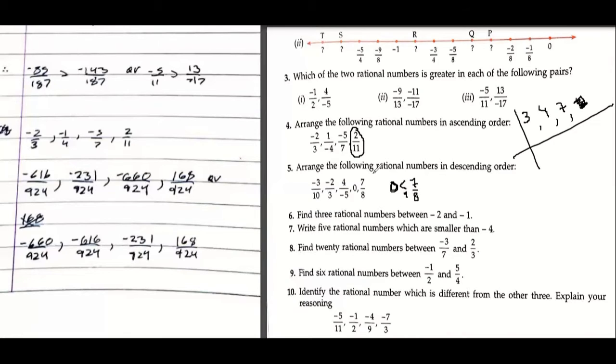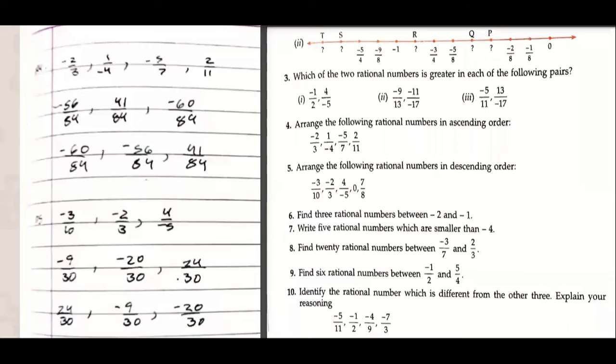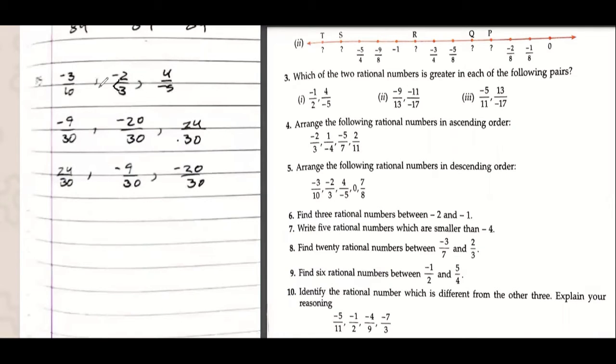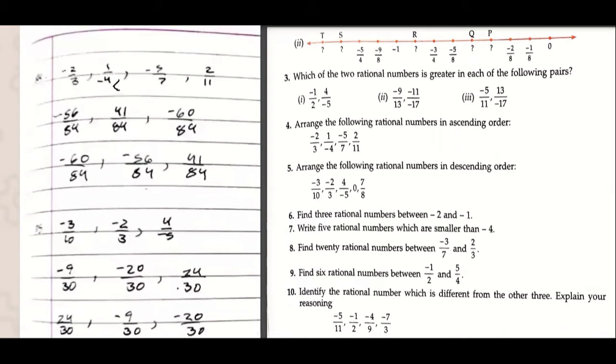Yes yes yes so do one thing, do the questions again, both the question four and five right now. Yes okay so now according to that you have taken LCM of three, four and seven so LCM is 84. So you need to show the working.